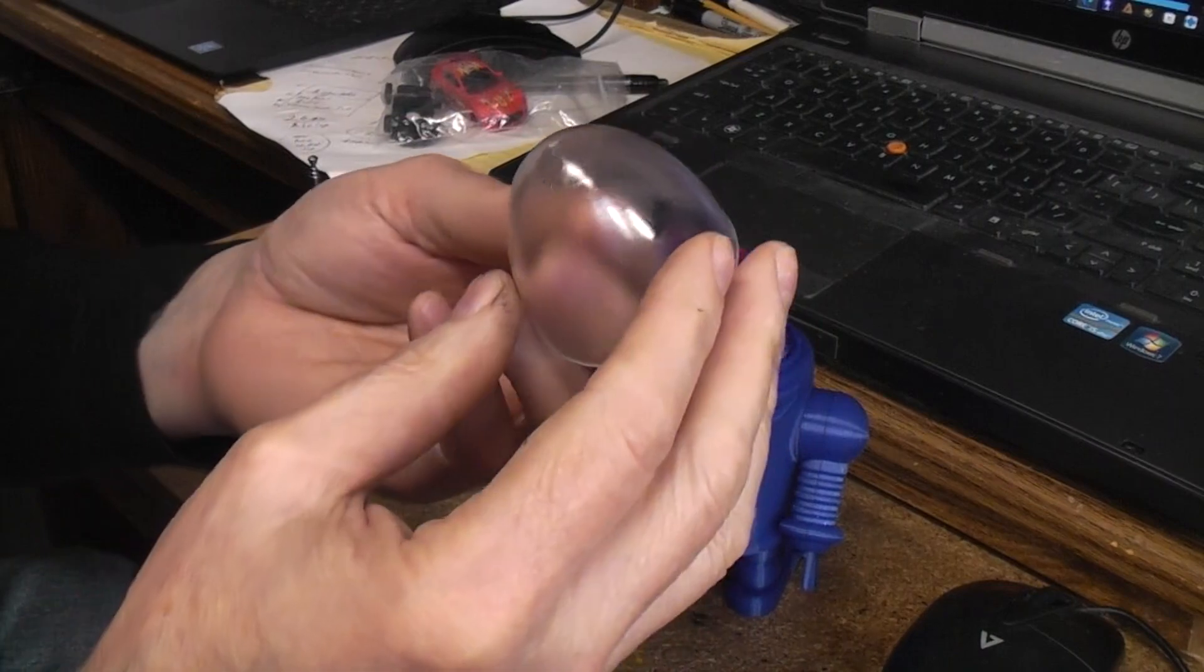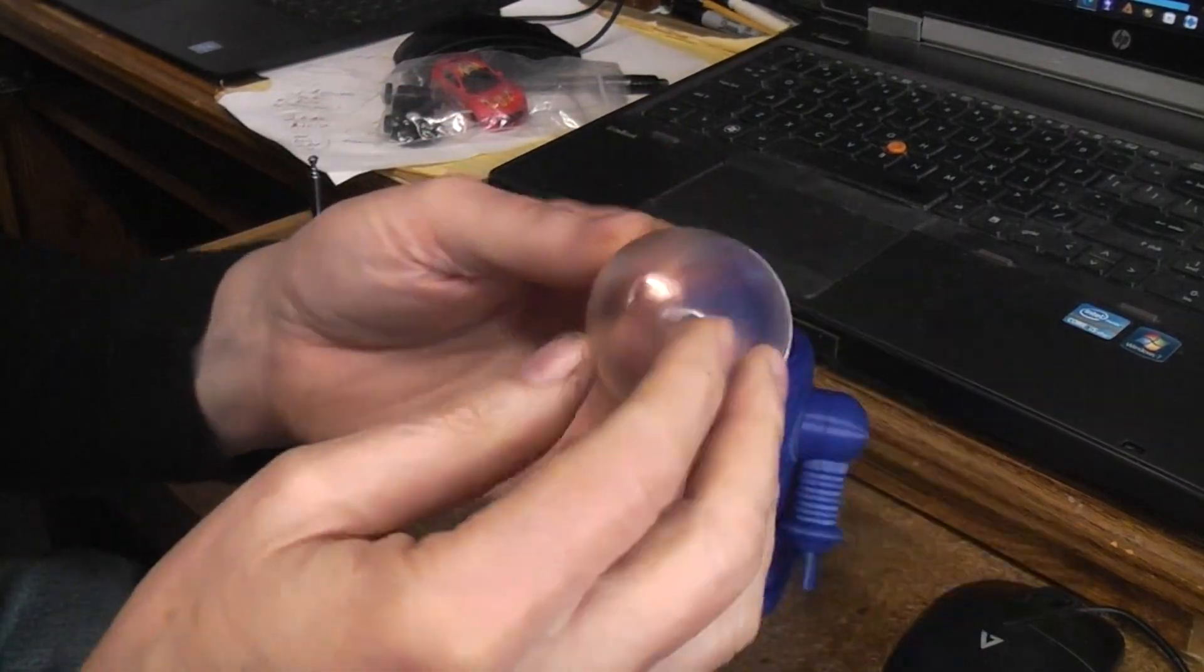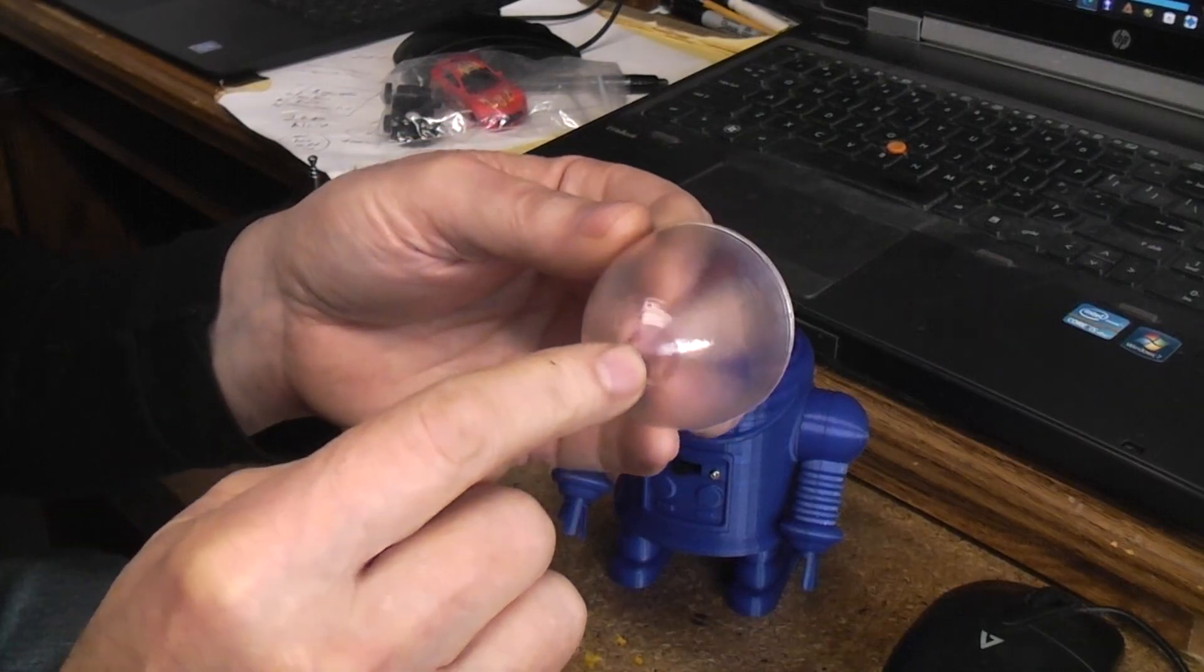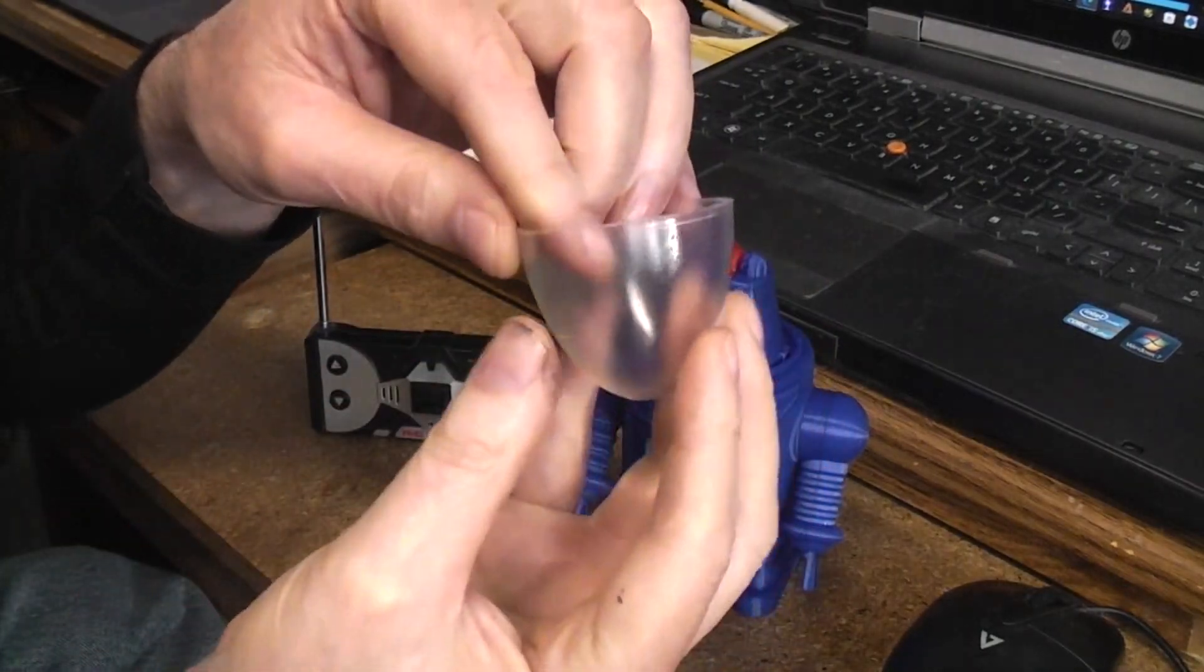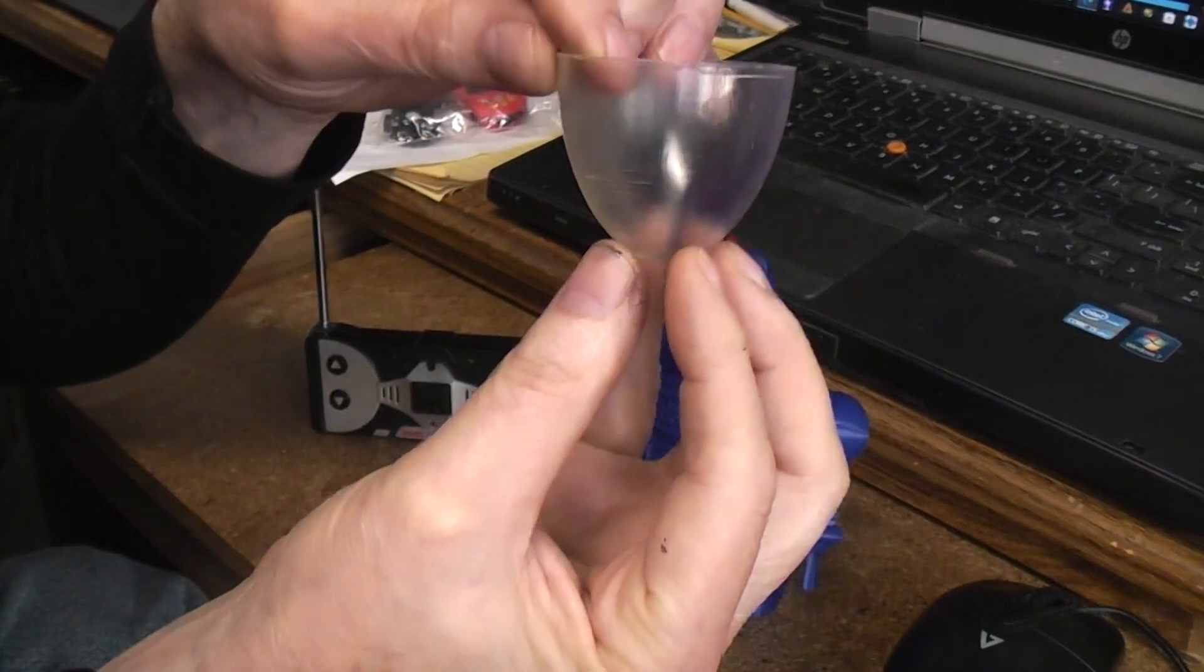Now because I wanted this to be a clear dome, I couldn't print it with supports in any way and I couldn't print it with a hole to let the resin get out. So as you work your way down, resin does build up inside this cup.